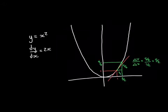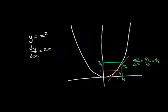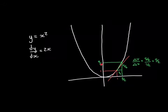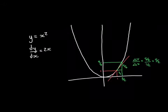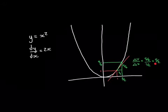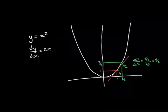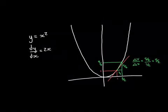Delta x is 0.5, which we chose. Delta y is 2.25 take away 1, which is 1.25 or 5/4. Dividing delta y by delta x gives 2.5, so 2.5 is a better approximation than 3 for the gradient of our tangent line.